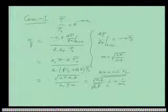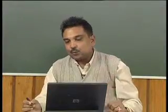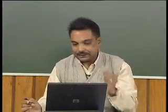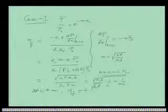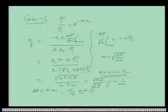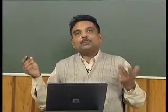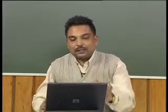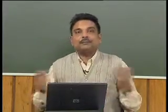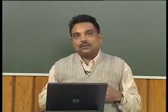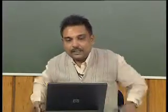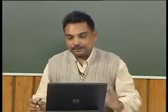For a long fin, the efficiency is 1/(M·L). This means that as L tends to infinity, the efficiency tends to zero. This is why infinitely long fins have no practical relevance — both from an efficiency standpoint and from a fabrication standpoint, as there is nowhere to accommodate such a fin. So for Case 1, the efficiency expression is 1/(ML).